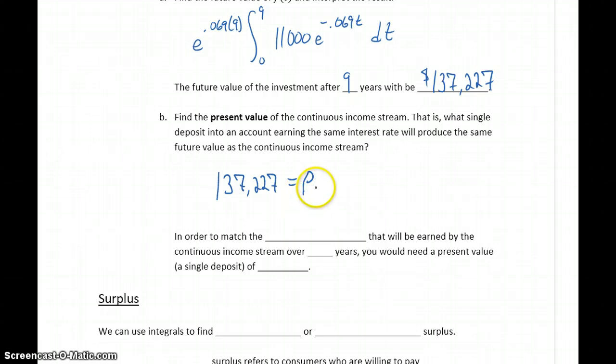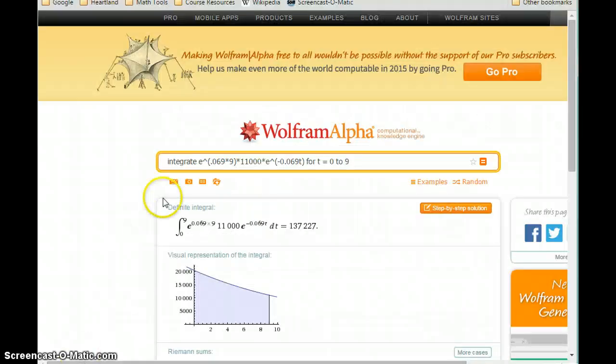Since we're talking about an account that's continuously compounded, we can use P times e to the RT. So we can assume that same interest rate, and we know that we'll be investing it for nine years. We want to know what principal amount would we have to invest now to achieve this same amount after nine years.